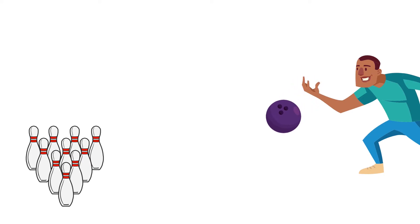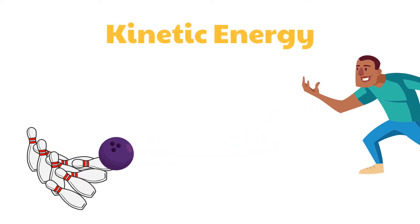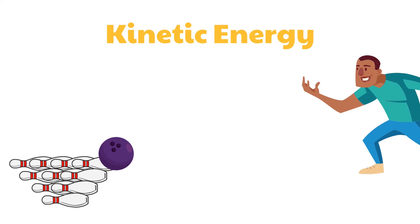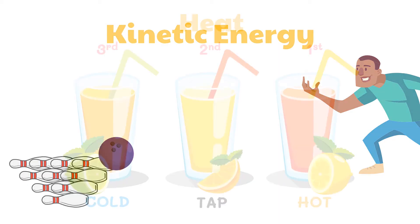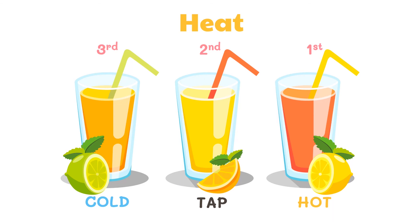We have learned previously that objects possess kinetic energy — even the small things that you cannot see also move and have kinetic energy. The activity we had earlier showed that as the powder drink scattered in the water, the particles of water are moving too. We also observed that the powder drink scattered fastest in hot water and slowest in cold water.